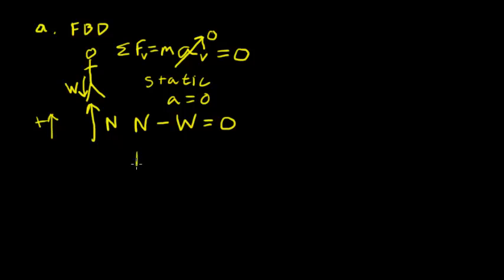So the normal force acting on the man's feet is simply going to be equal to the body weight. And we can, of course, solve for the body weight because we're given the man's mass. It's 80 kilograms. So the normal force is equal to the body weight, which is going to be equal to M times G, the acceleration due to gravity. In our case, this is going to be 80 kilograms multiplied by 9.81 meters per second squared.